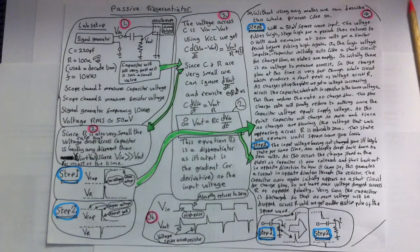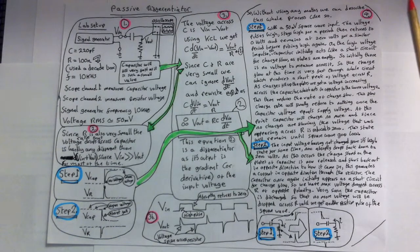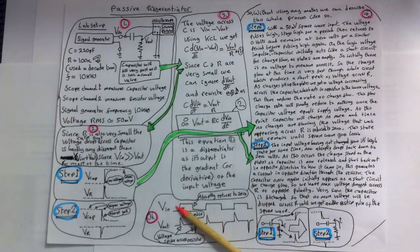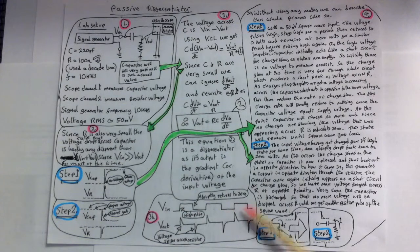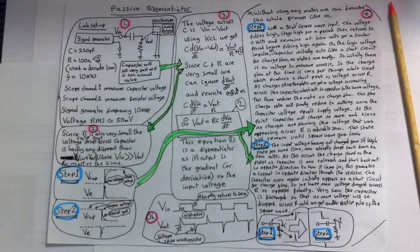With a 50 millivolts square wave input the voltage pulses high, stays high for a period, then returns to 0 volts and remains at 0 volts for a similar period before pulsing high again. So basically we're just going through a summary of what's happening.